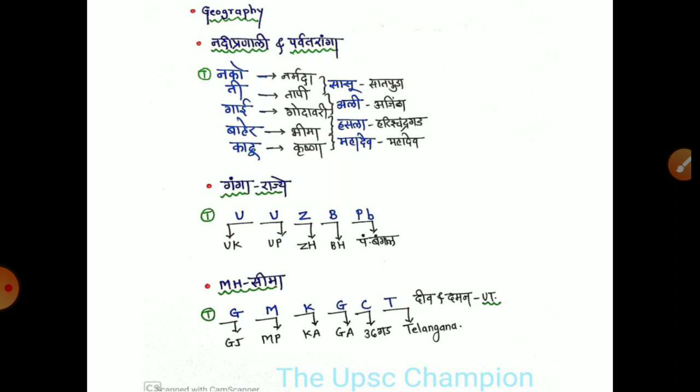The states that border Maharashtra are: M means MP (Madhya Pradesh), K means Karnataka, G means Goa, C means Chhattisgarh, T means Telangana. And the Union Territory that applies to Maharashtra is Daman and Diu. The trick is: GM K G C T.